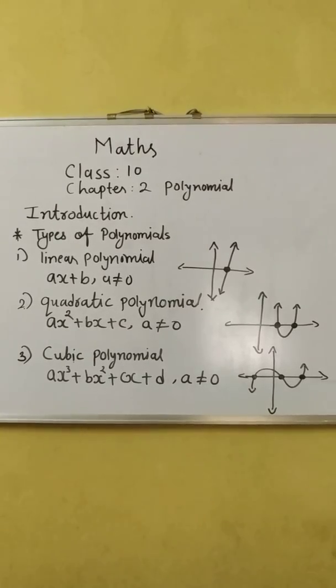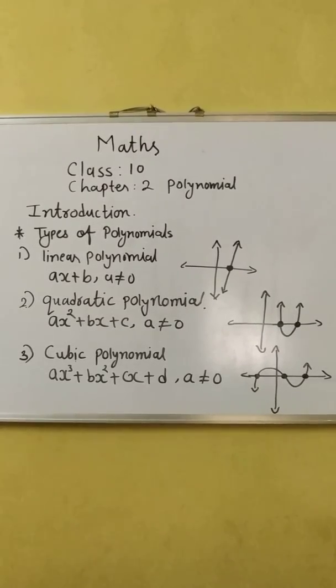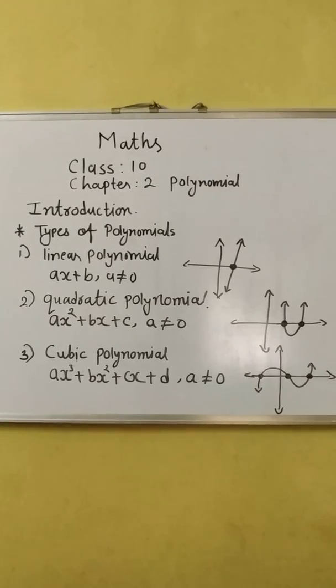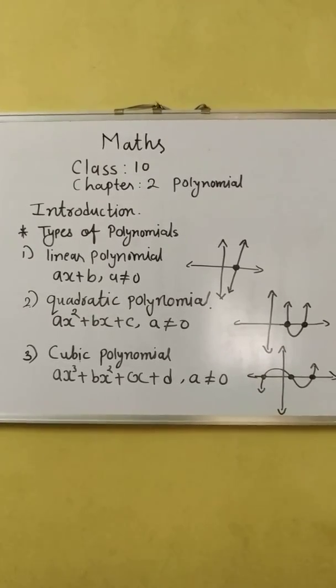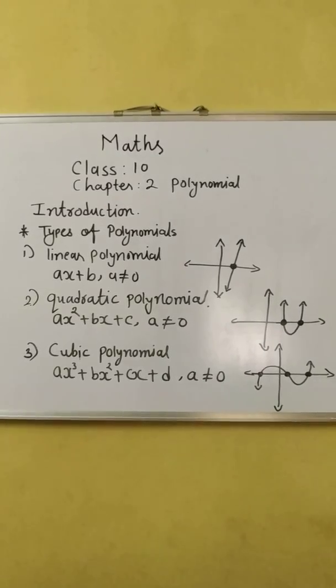The first one is linear polynomials, which have a general formula as ax + b where a cannot be 0. Here when a will become 0, this polynomial will become constant polynomial.